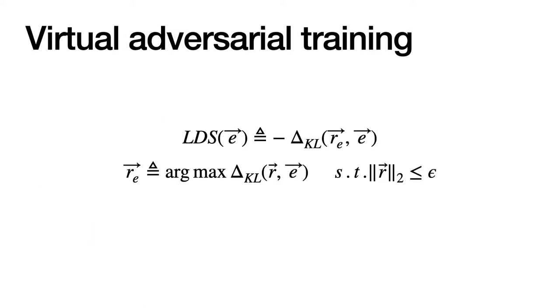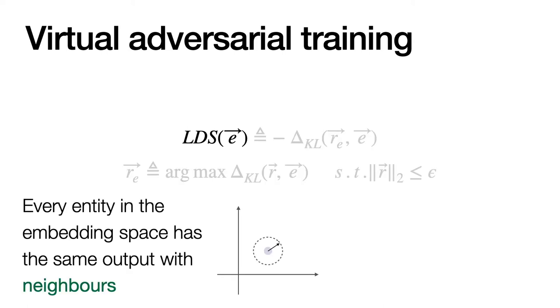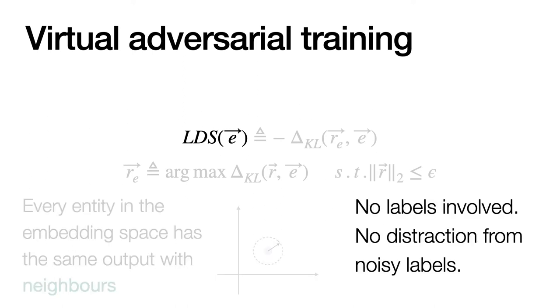We also incorporated virtual adversarial training, an important technique in semi-supervised classification. Virtual adversarial training is a term added to the loss function. So basically, for each entity in the embedding space, virtual adversarial training forces its neighbors to have the same output from the model. And you can see, during this process, there's no label involved. So our model can learn from the dataset without being distracted by noisy labels.